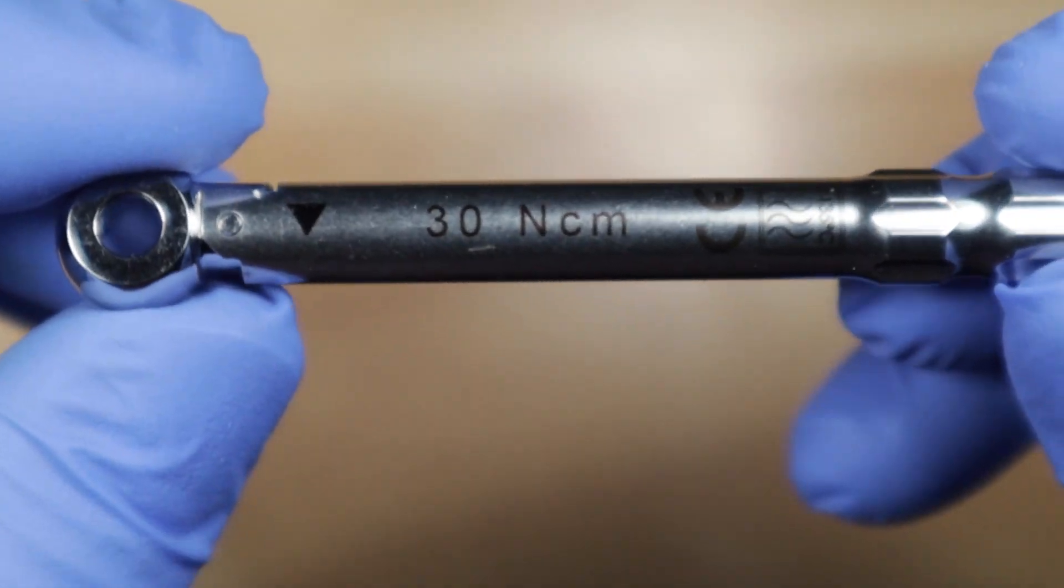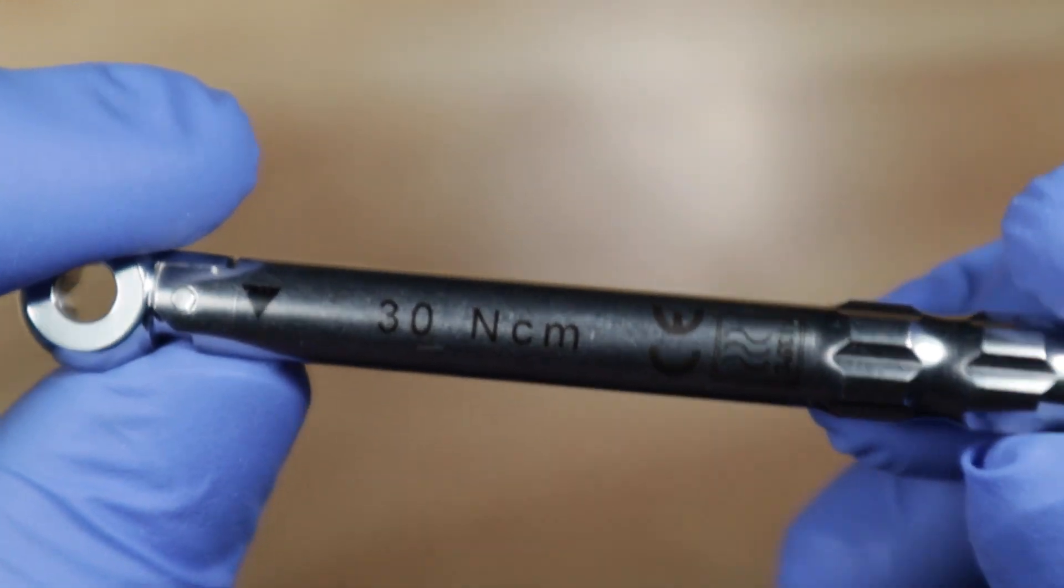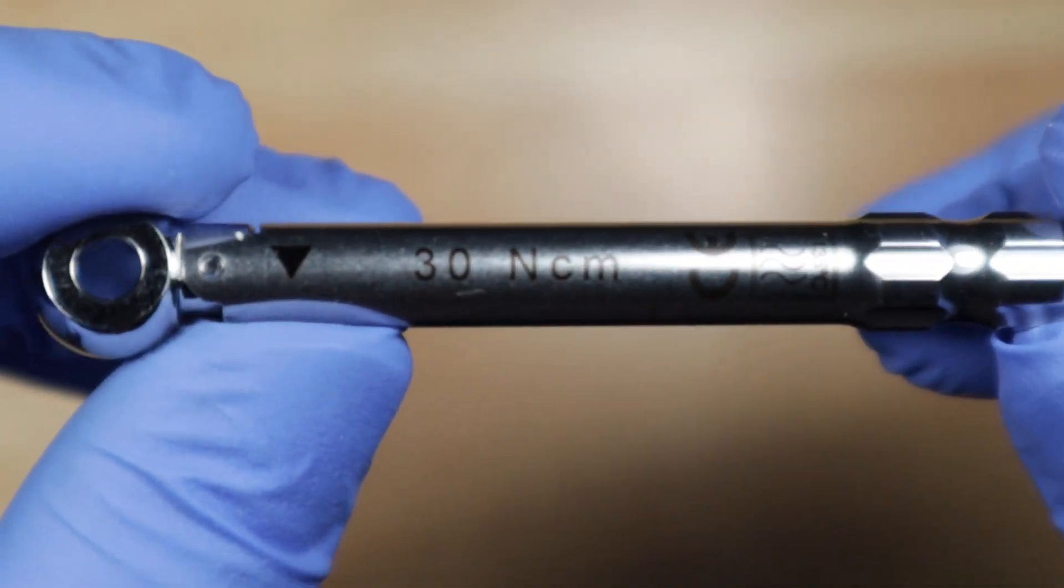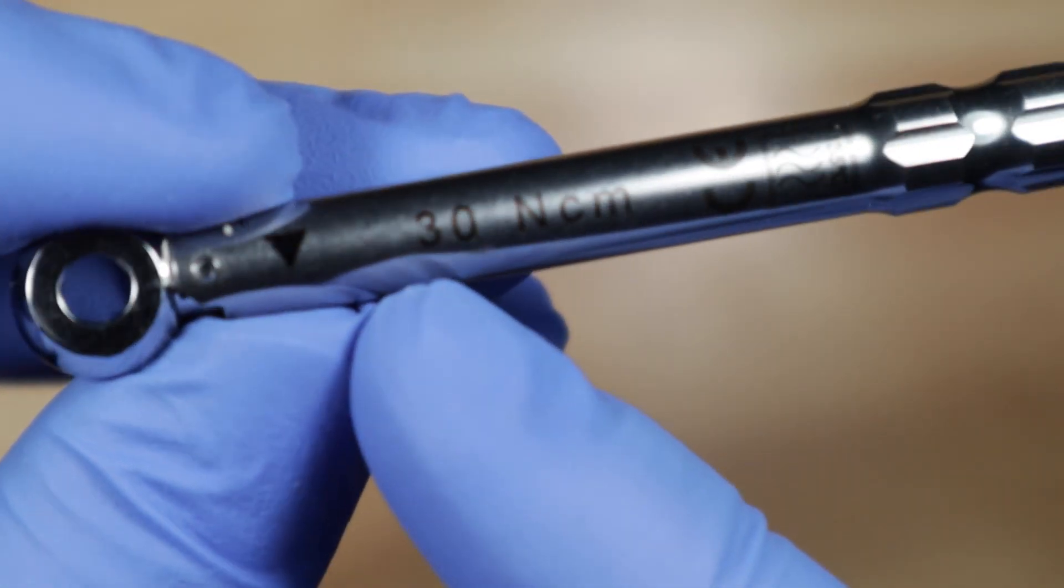So now let's talk about the prosthetic torque wrench. This is the prosthetic torque wrench that comes with the starter pack. So this is a single setting torque wrench. That means it says 30 newton centimeters.